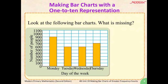Now, let's take a look at another bar chart. What is missing from this bar chart? The answer is, it is missing the title of the bar chart. Did you get it correct? Now, students, remember, these are all very important elements of a bar chart. So when you make your own bar chart, be sure to put them in.